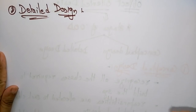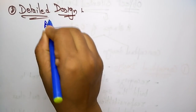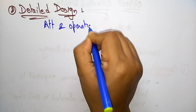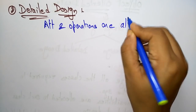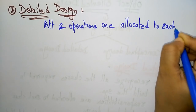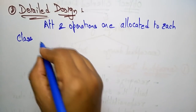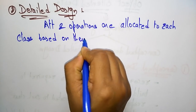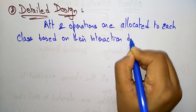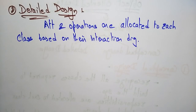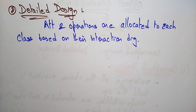In detailed design, the attributes and operations are allocated to each class based on their interaction diagram. Whereas in conceptual design we focus on class diagrams and interaction diagrams — the communication relationships between classes and the flow of events — in detailed design we think about what attributes and operations are present in each class, defining the internal structure of the class.